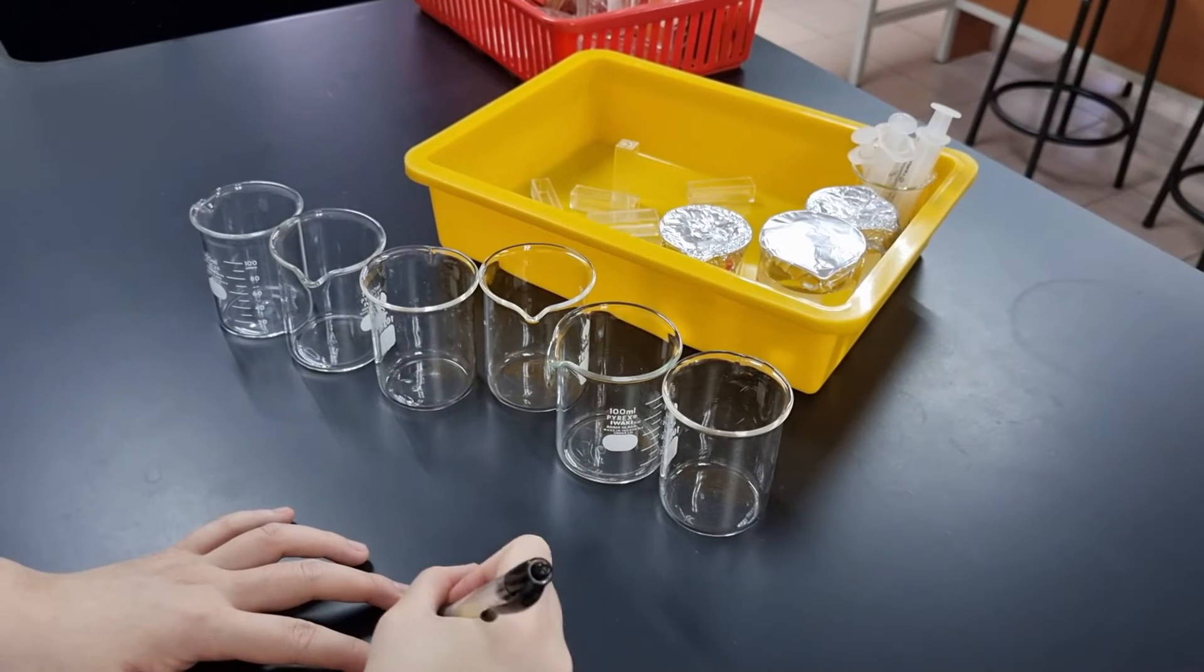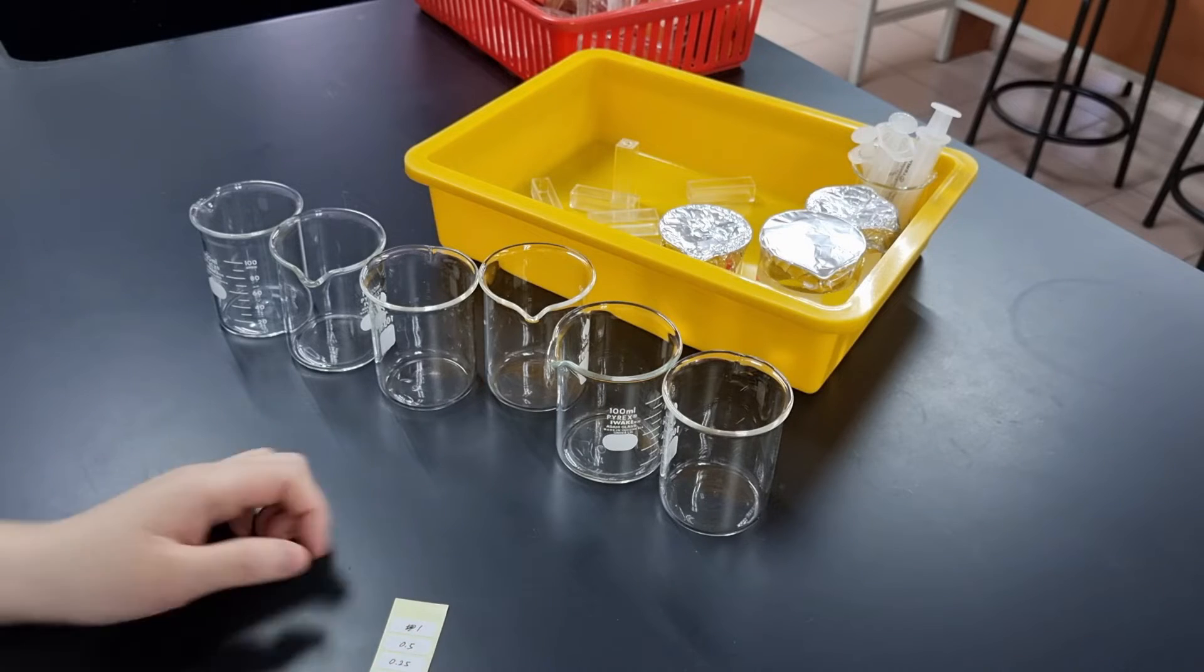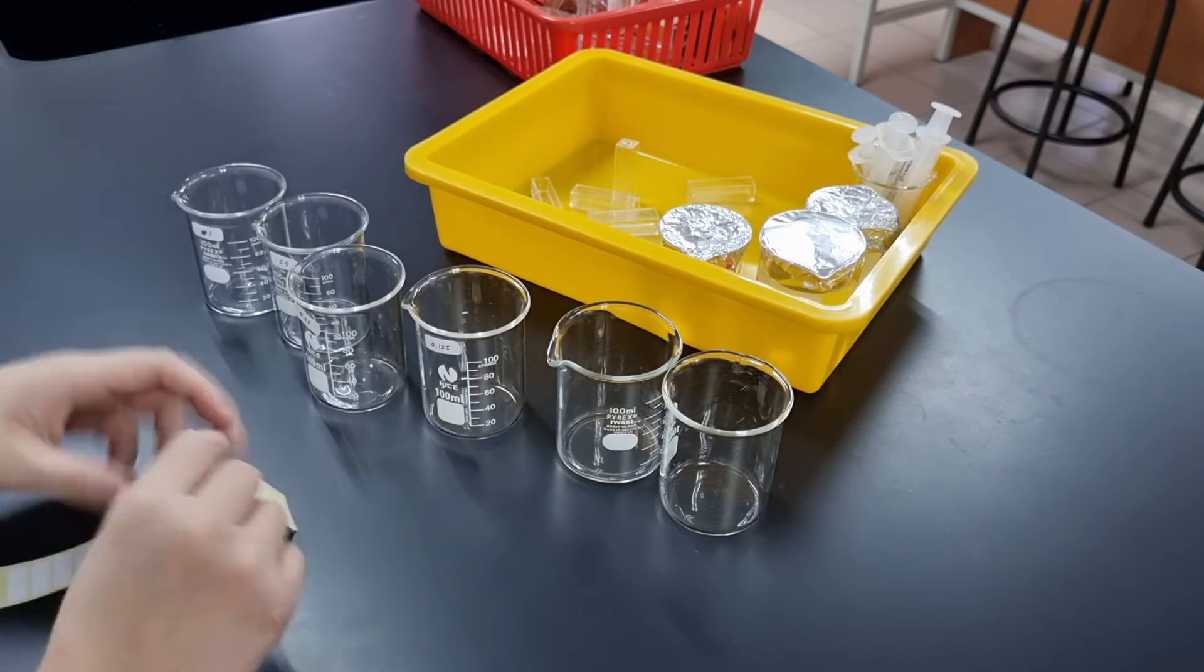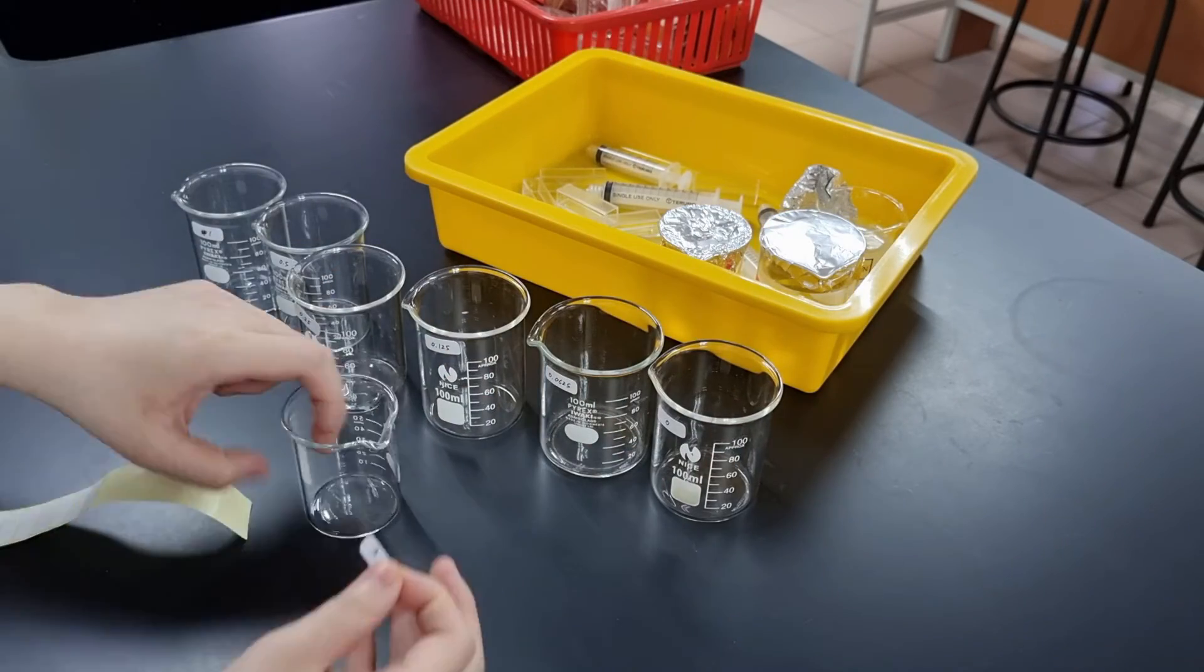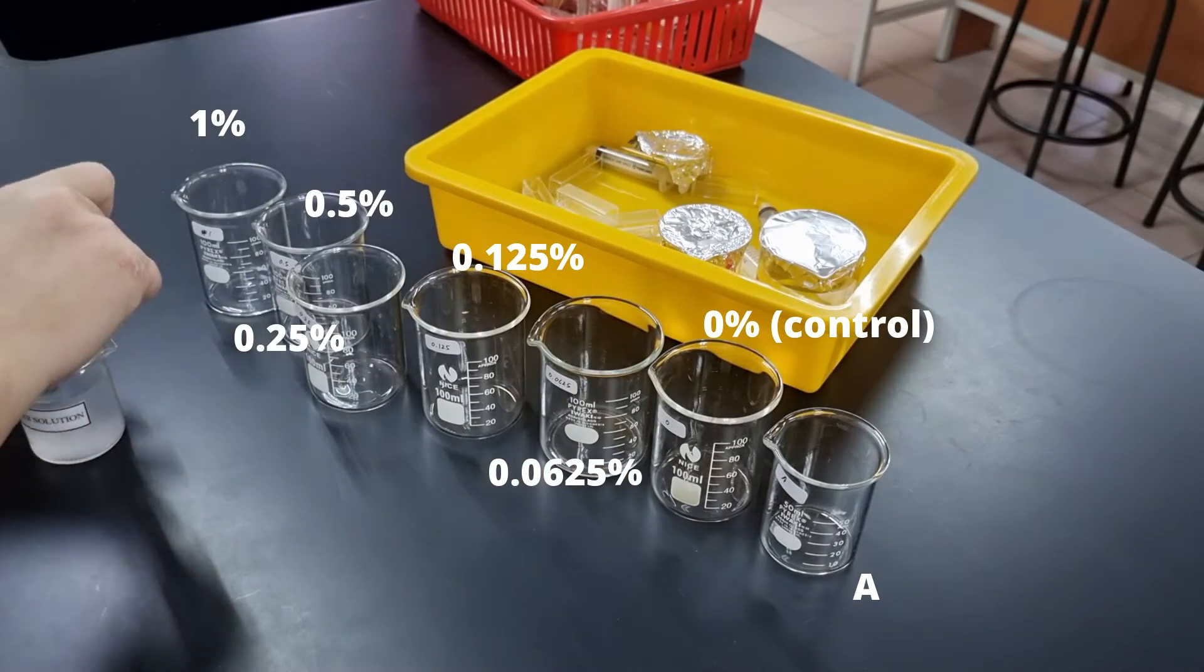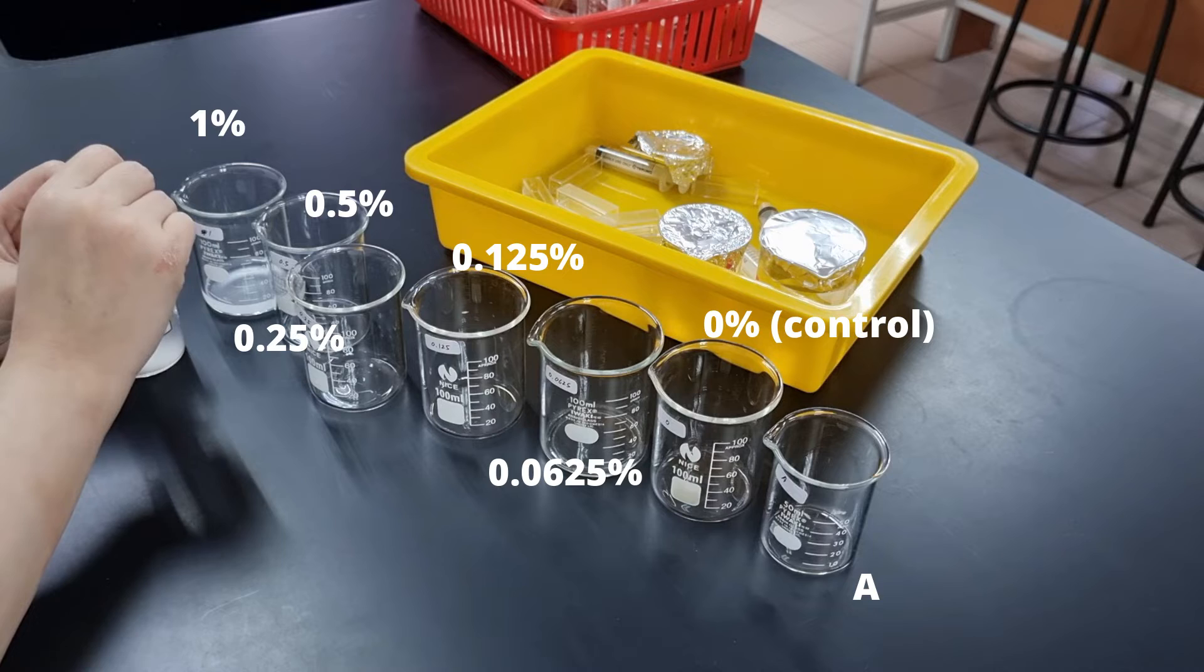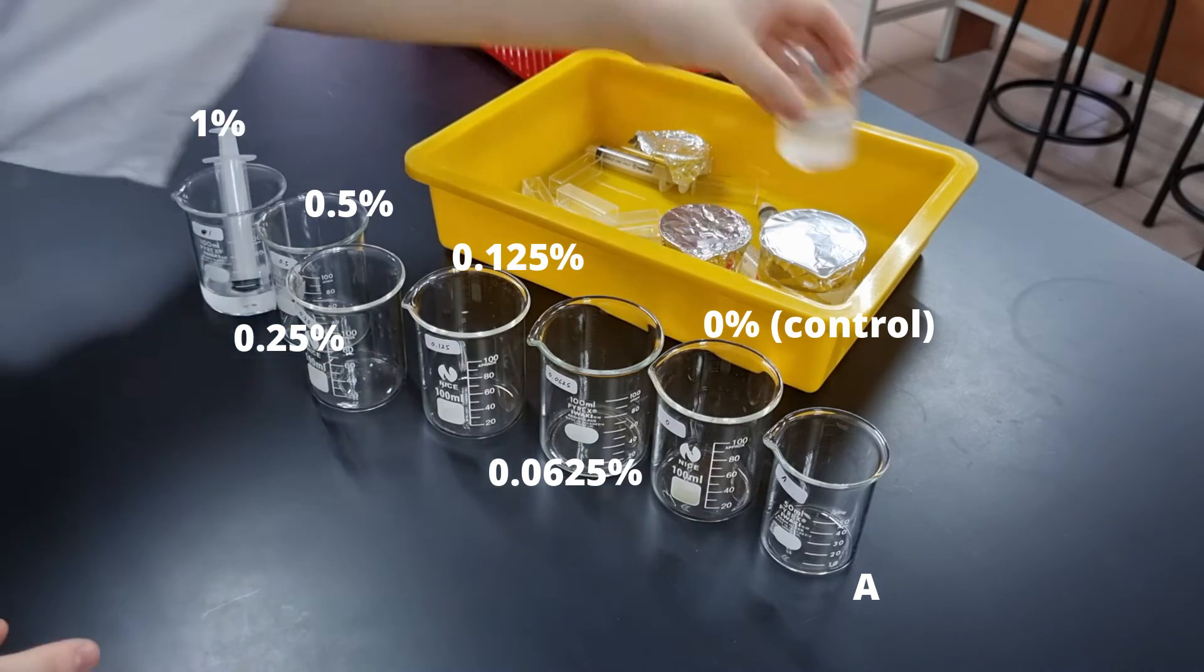Now that we are done with our calculations, we can then proceed to actually perform serial dilution in real life. Make sure to label your beakers. We have seven different beakers here. Because other than the five concentrations, we are also doing one that is zero percent, which acts as a control. So it's just 10 cm³ of distilled water. And also, beaker number seven would have unknown solution A.